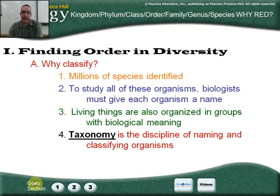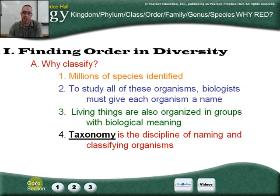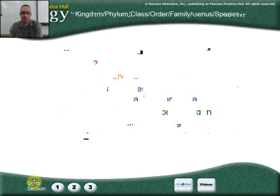So far we've been organizing things by how they look, how they appear, and where they live. Taxonomy is the discipline of naming and classifying organisms according to levels and common things that they have. So bears end up being in the same kingdom, phylum, class, order, family, and genus, and then we can separate them into different species, getting more specific as we go.